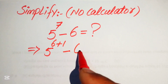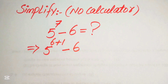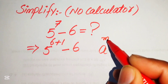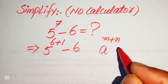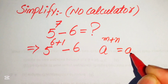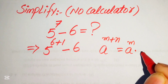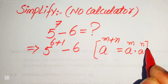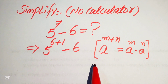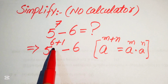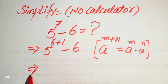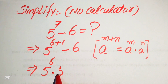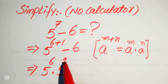After this step, we need the exponent law. You know that if we have a to the power of m plus n, it equals a to the power of m multiplied by a to the power of n. So according to this exponent law, we break the exponent of this term and write it as 5 to the power of 6 multiplied by 5 to the power of 1, minus 6.